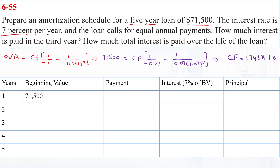After calculating the cash flow, we prepare the amortization schedule for five years. In Year 1, the beginning value is $71,500. The payment is $17,438.18 and the interest is 7% of $71,500, which equals $5,005.00. Out of this payment, the principal amount repaid is $12,433.18.